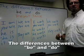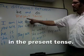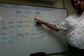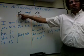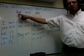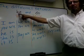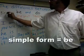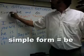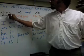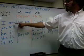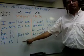Let's look at the differences between 'be' and 'do' in the present tense. This is the verb 'be' in the simple form, and this is the verb 'be' in the present tense form.